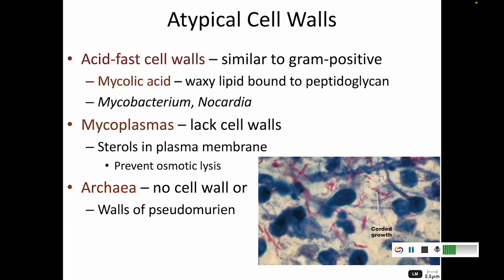There are a few cells that are a little different. Acid-fast cells are similar to gram-positive, but they incorporate a chemical called mycolic acid — a waxy fat that sticks to the peptidoglycan. Mycolic acid is found in Mycobacterium and Nocardia, and these cells can be stained with an acid-fast stain. Mycoplasmas have no cell wall — they only have a plasma membrane — so they won't be affected by any antibiotic that targets cell wall synthesis. Mycoplasmas add sterols into their plasma membrane to prevent water from flowing in and bursting the cell. Archaea either have no cell wall or have one made of pseudomurein.